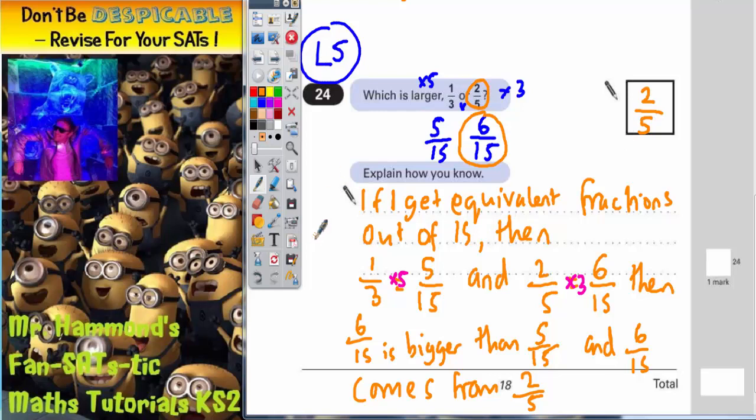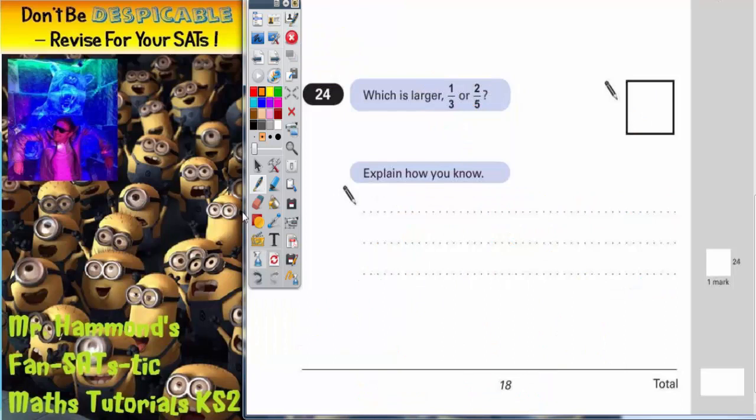You could actually do a completely different way, which doesn't talk about fractions at all, which talks about percentages. So you could do this. You could draw yourself a pizza and split that into thirds. And then, you could draw yourself another pizza for 2/5. This time, obviously, split it into fifths.